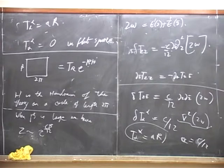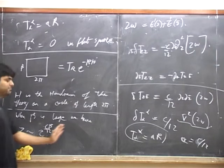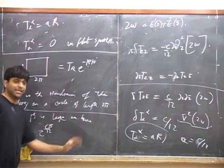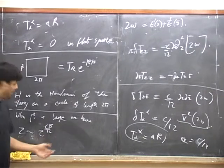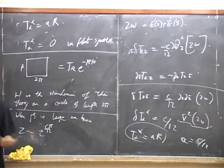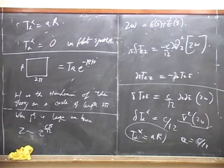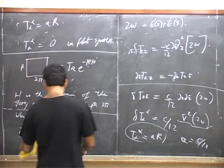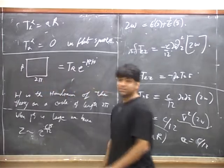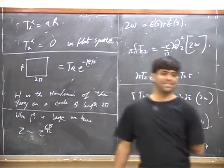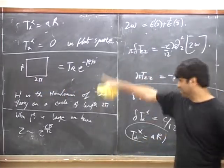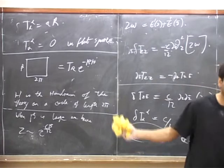But that translates to L_0 and L̄_0 both equal to minus C/24 on the cylinder, and therefore energy L_0 + L̄_0 equals minus C/12 on the cylinder. You see: the vacuum is scaling dimension zero in the plane, but there's a shift between energies on the cylinder and scaling dimensions on the plane — the shift was by a factor of minus C/24 for L_0, and similarly minus C̄/24 for L̄_0. So you get a total shift of minus C/12, and the vacuum energy on the cylinder is minus C/12.